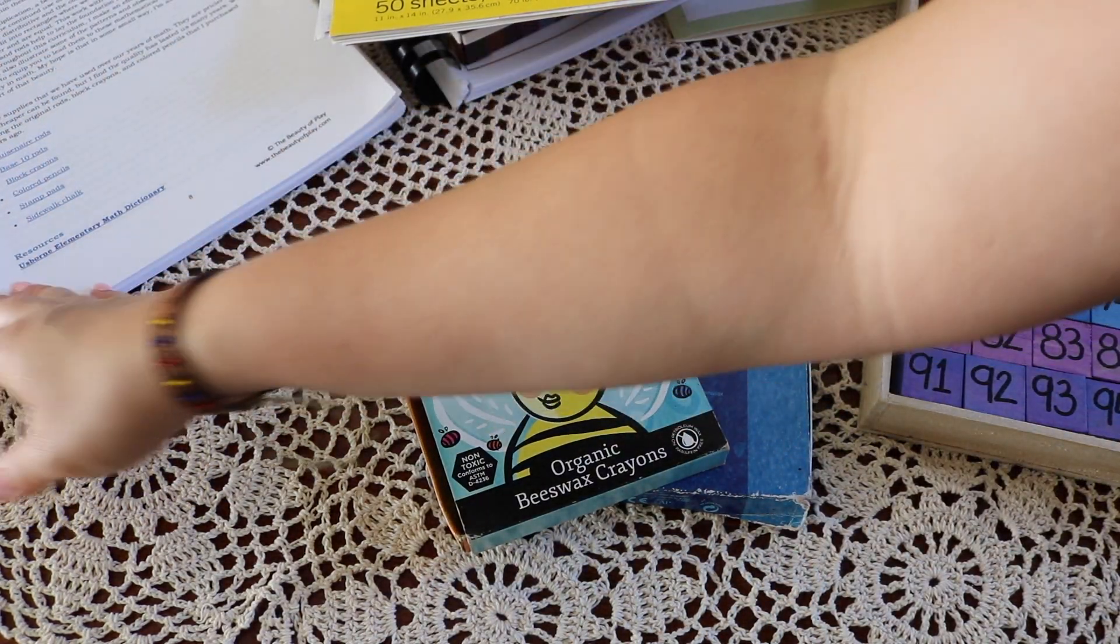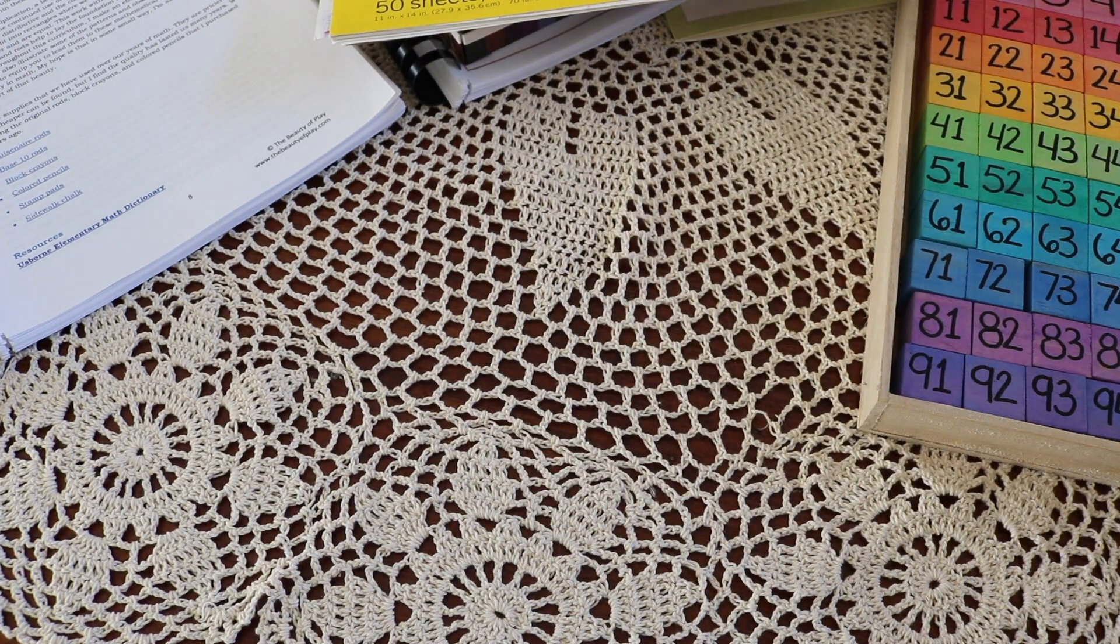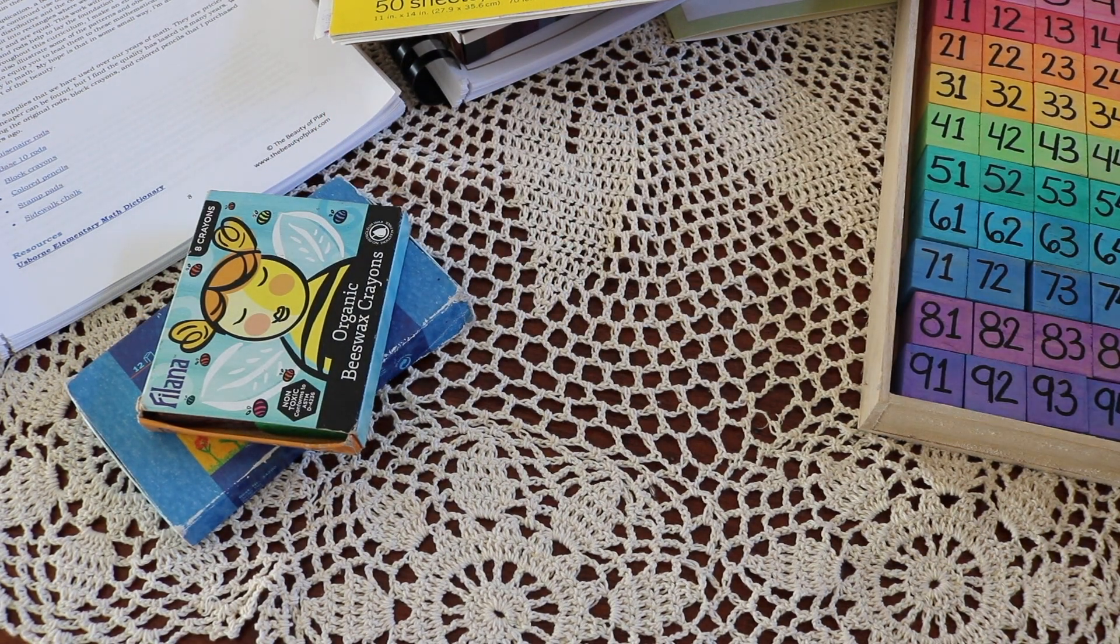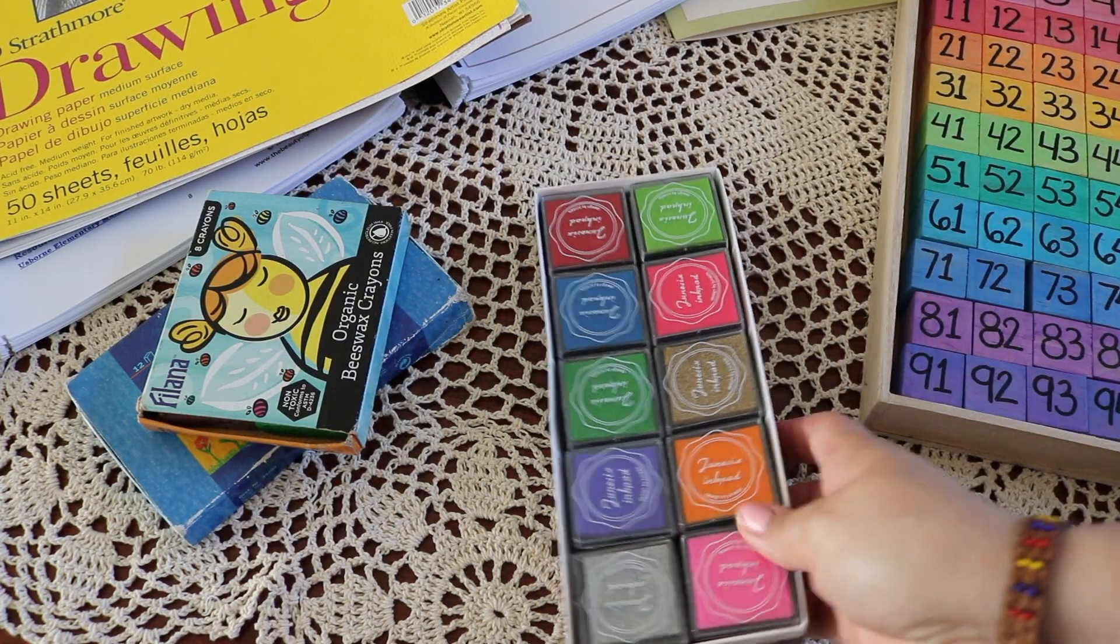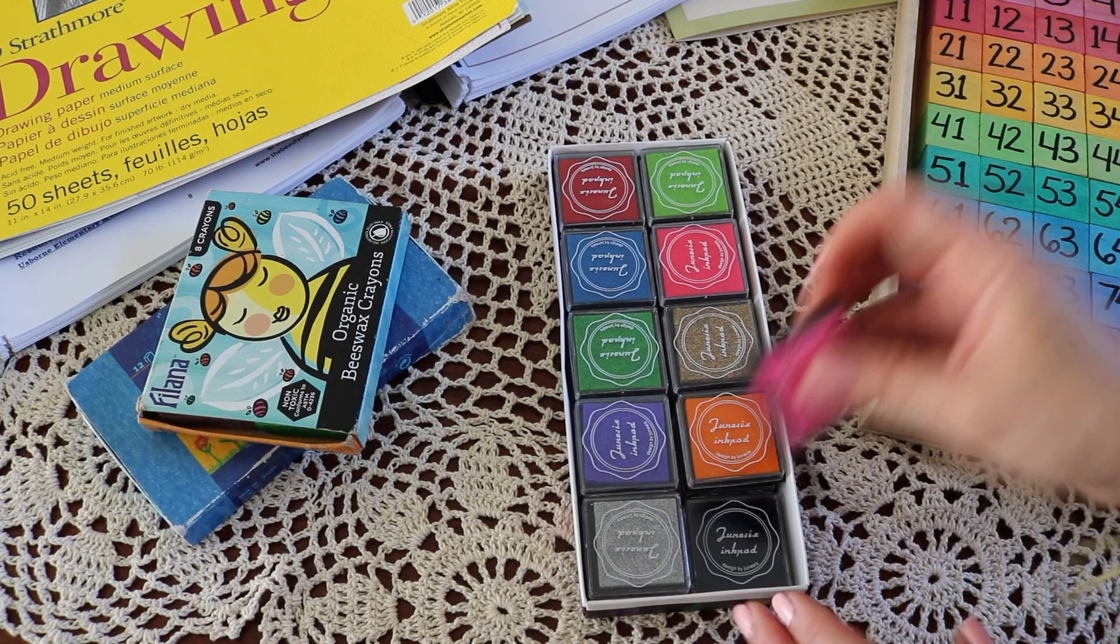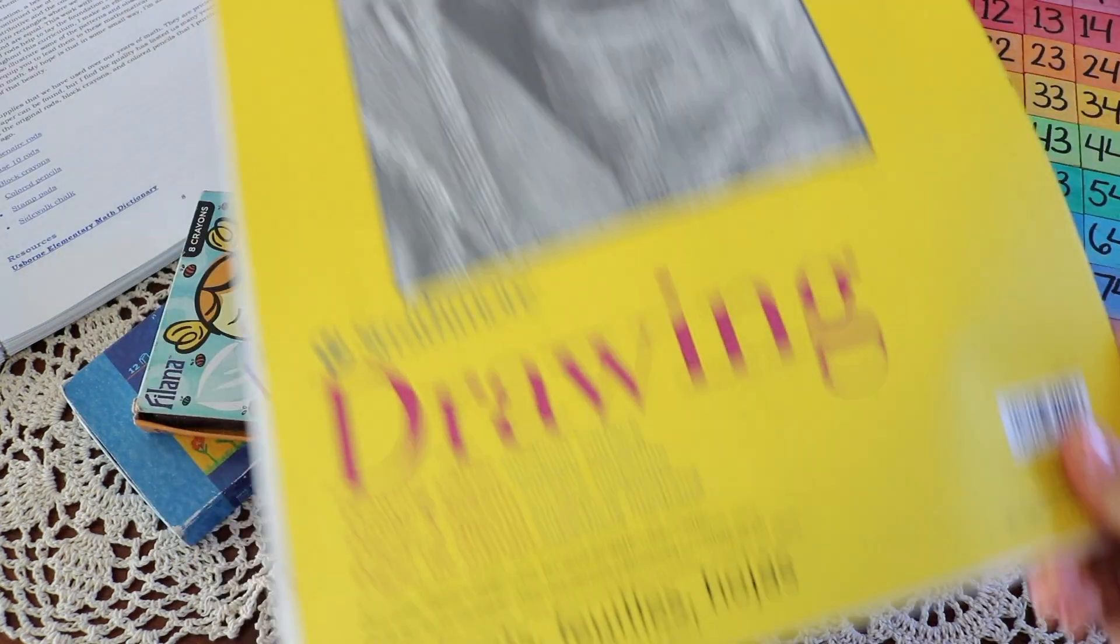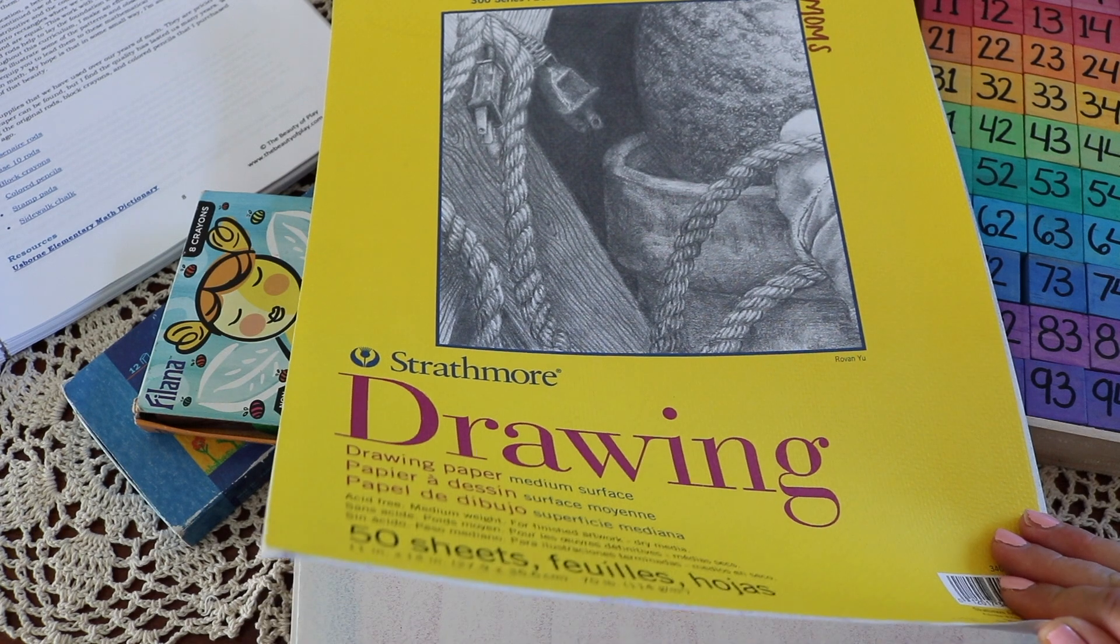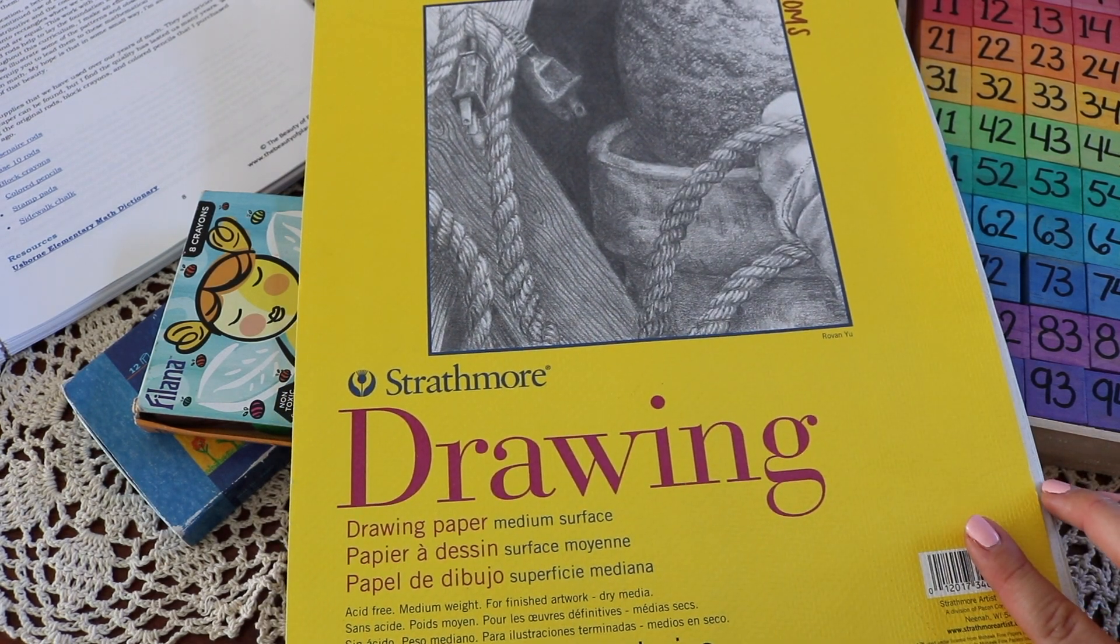Colored pencils: we have several sets, different brands from Target to Prisma. A good in-between brand for quality and cost-effectiveness is Arteza. Stamp pads: all of ours we used and abused, so I did have to pick up a new set. This is a set of 20 washable, non-toxic ink pads from Amazon. Sidewalk chalk, and we have a bucket full in the garage for outside play.